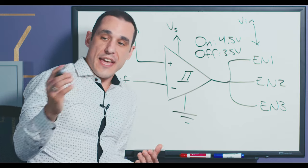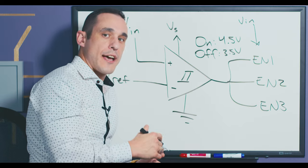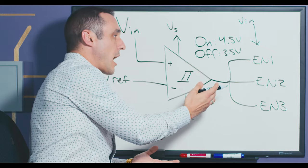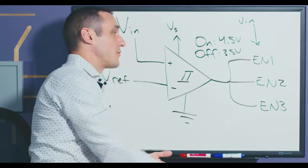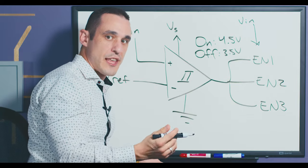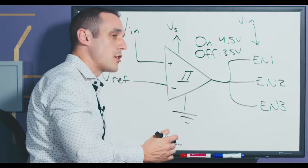Now just like we saw with the Analog Devices component that we were looking at on screen, this also relies on your downstream regulators having enable pins. So if there are no enable pins on those regulators you can't use those regulators in this type of topology.